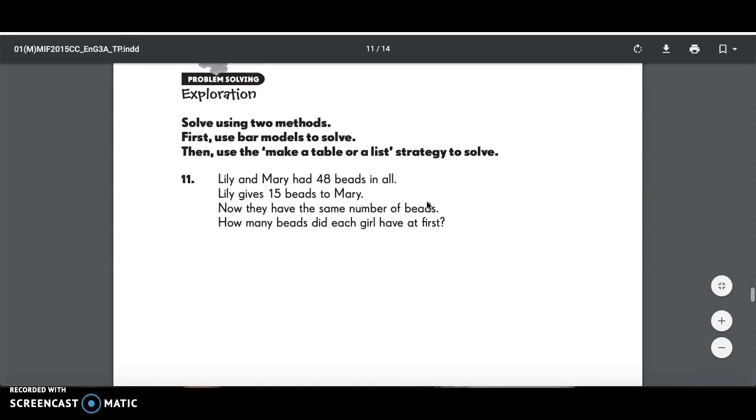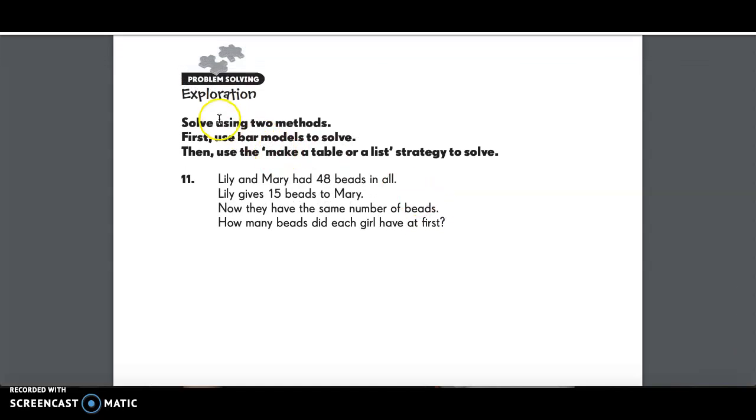Number 11, solve using two methods. Two methods. So that wants two different methods. First, use the bar model. Then use they make a table or a list. Lily and Mary have 48 beads in all. Lily gives 15 beads to Mary. Now they have the same number of beads. How many beads did each girl have at first?